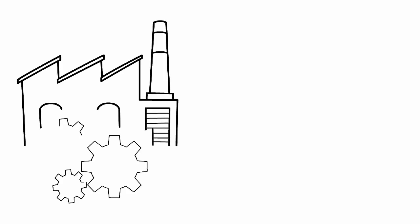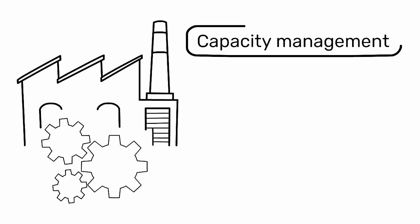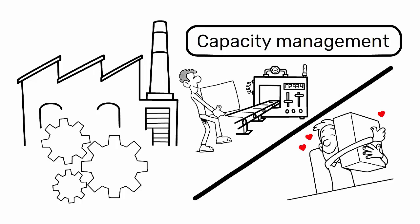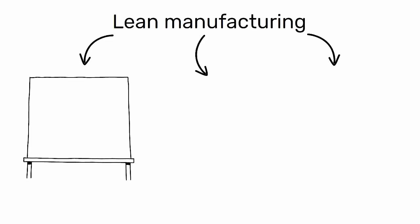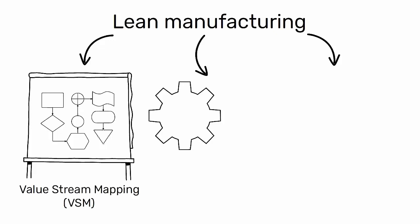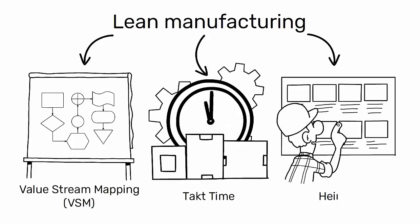In the realm of industrial engineering, capacity management is pivotal for ensuring that production systems are both efficient and adaptable to meet customer demands. Lean Manufacturing offers a suite of tools designed to optimize capacity management, and among these, Value Stream Mapping (VSM), Takt Time, and Heijunka stand out for their effectiveness.